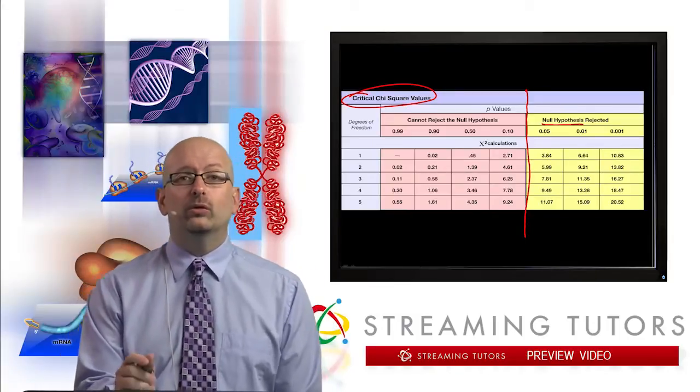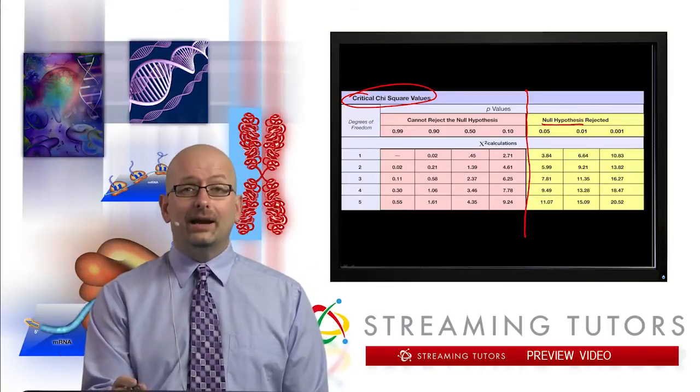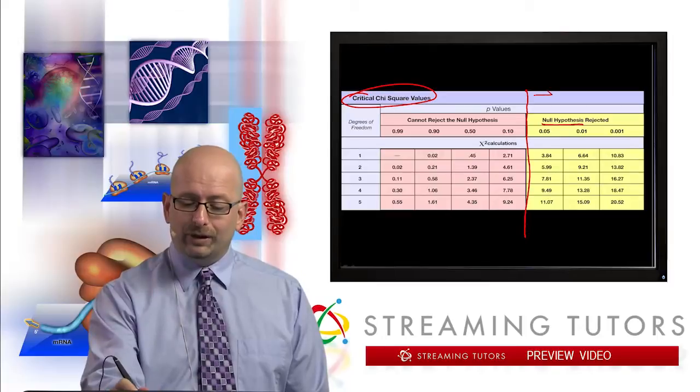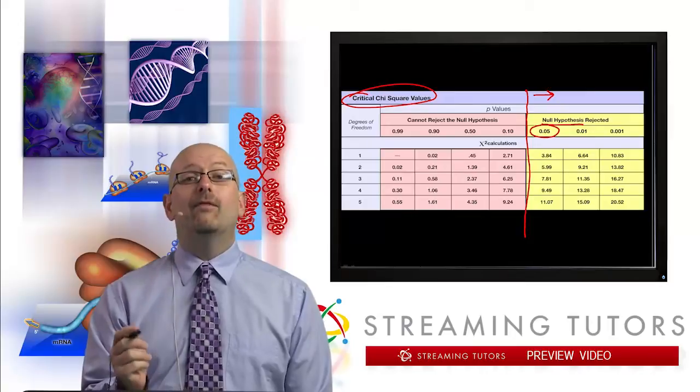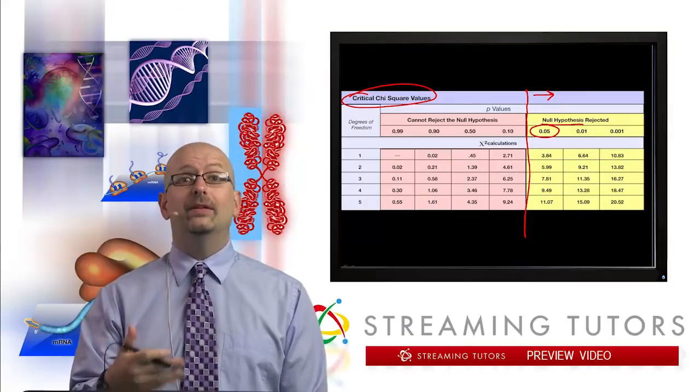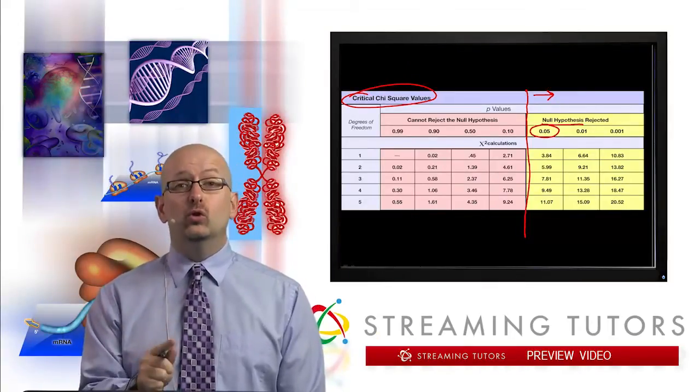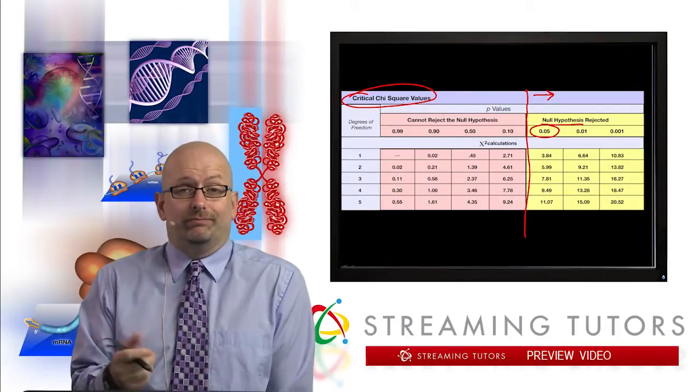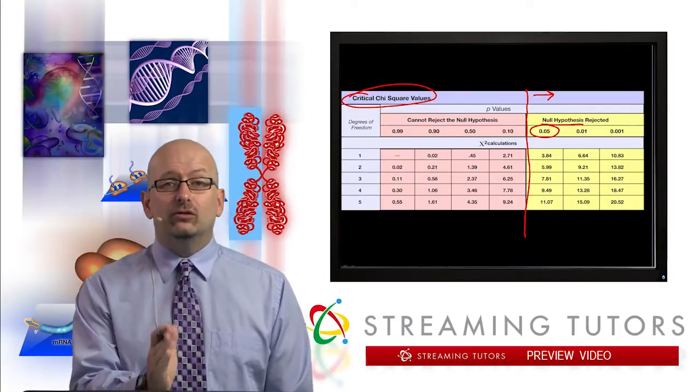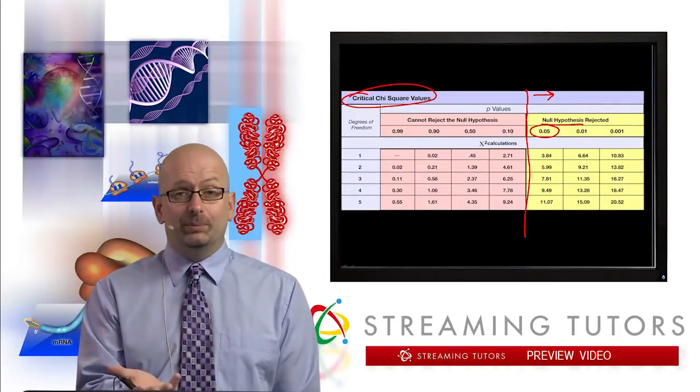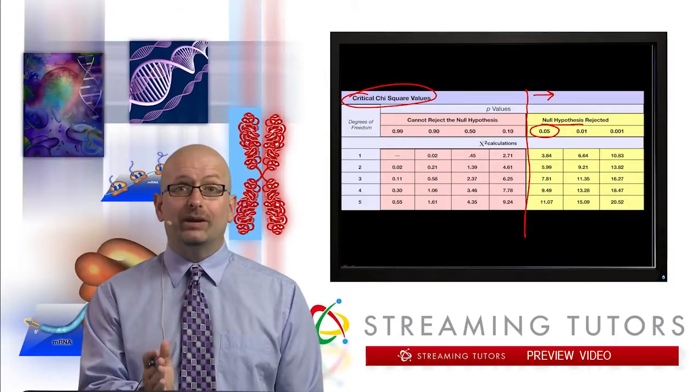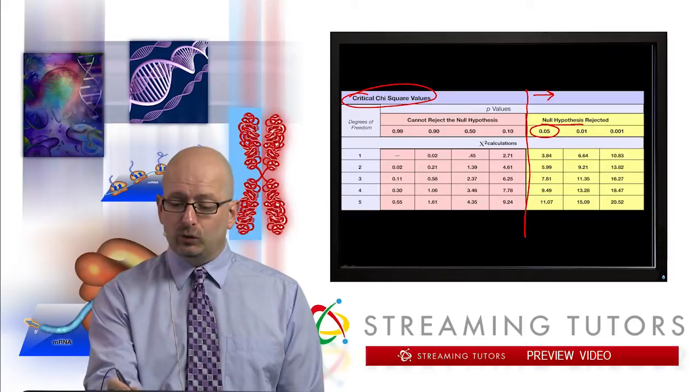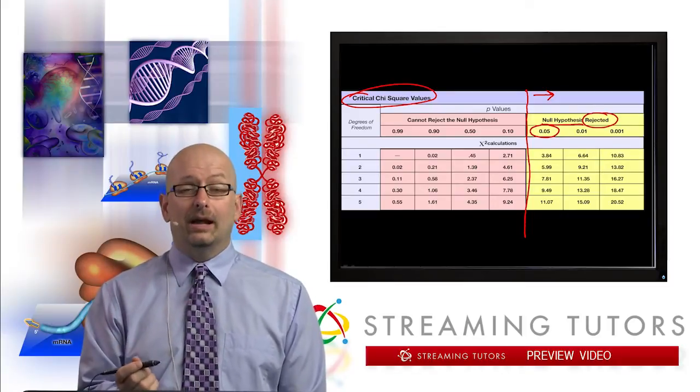This right here is a very important line. The null hypothesis is the one that we just made, which is that these genes are unlinked. By the way, this can be used in all sorts of ways. But in genetics, this is mainly the way that it's used. So in other words, they're saying this. If you get a chi-square value that falls on this side of the line, and the line represents a 5% probability that this deviation occurs due to random chance.